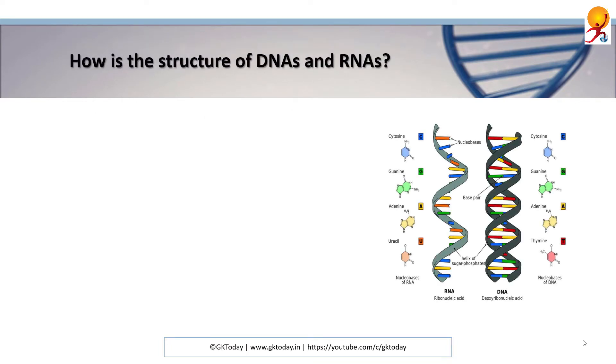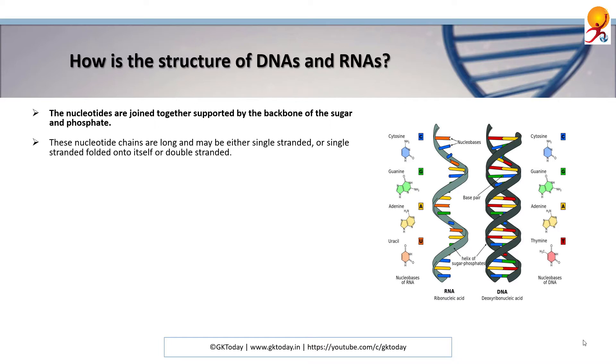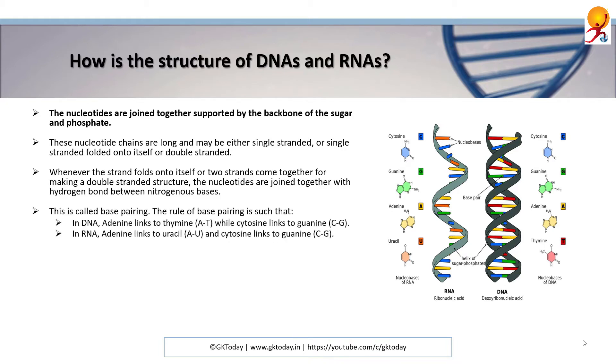How is the structure of DNAs and RNAs? The nucleotides are joined together supported by the backbone of the sugar and phosphate. These are long chains that may be either single-stranded or single-stranded folded onto itself or double-stranded. Whenever the strand folds onto itself or two strands come together for making a double-stranded structure, the nucleotides are joined together with hydrogen bonds between the nitrogenous bases. This is called base pairing.